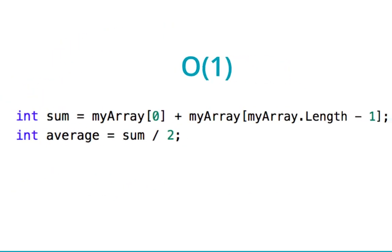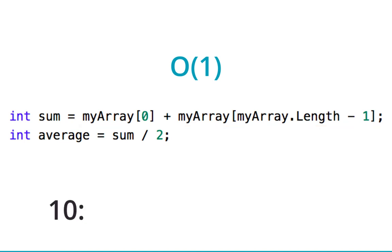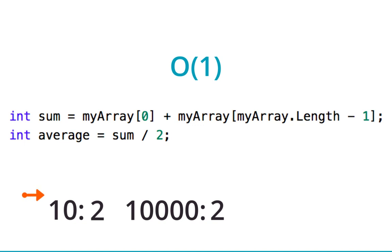Finally, let's look at an order 1 example. There are no loops here — it just takes the first and last item in the array and averages them. The size of the array has no effect on how fast this code runs. Whether it's an array of 10 or 10,000, it still only has to access two elements. This is order 1. It doesn't mean the program only has one line of code; it means that as the size of the array changes, the program is unaffected. The general rule of thumb is: if there are no loops, it's order 1.